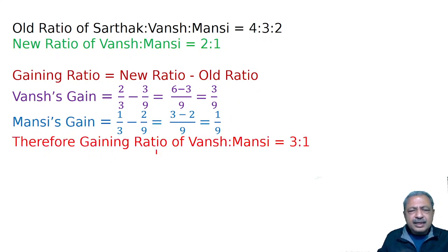Therefore, gaining ratio of Vansh to Mansi is equal to 3:1.